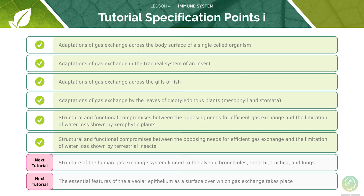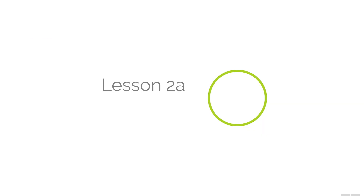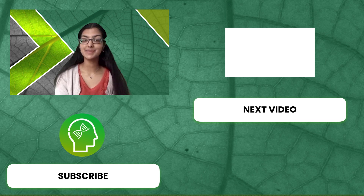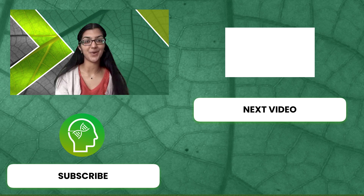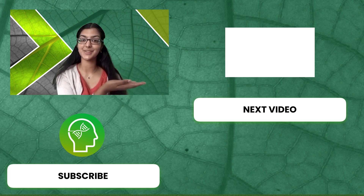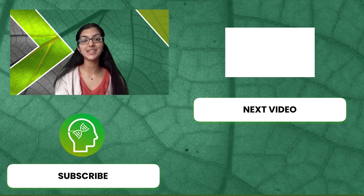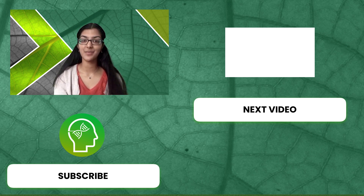We've now covered all the specification points for this lesson. Feel free to skip back through the video and re-watch anything you didn't understand. We'll be covering the last two points in our next tutorial. We've now completed Lesson 2A. If you enjoyed this tutorial, make sure to subscribe and leave a comment on the topic you'd like to see a video on. Click here to watch the rest of our videos in our A-level biology series, or visit studymind.co.uk for past paper compilations by topic and specification.